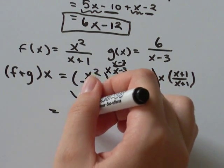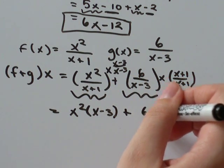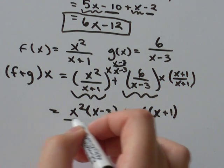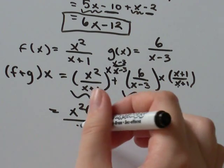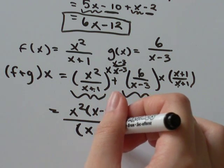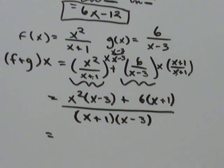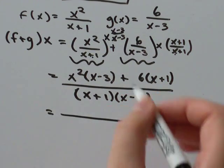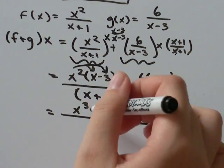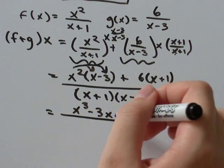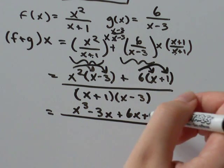What I've got now is x squared times x minus 3, plus 6 times x plus 1, over on the bottom you're just going to multiply the two different denominators together, x plus 1 times x minus 3. Let's simplify that. On the top, we've got x squared times x would be x cubed, x squared minus 3, negative 3x, plus 6x, plus 6 times 1 is just 6.